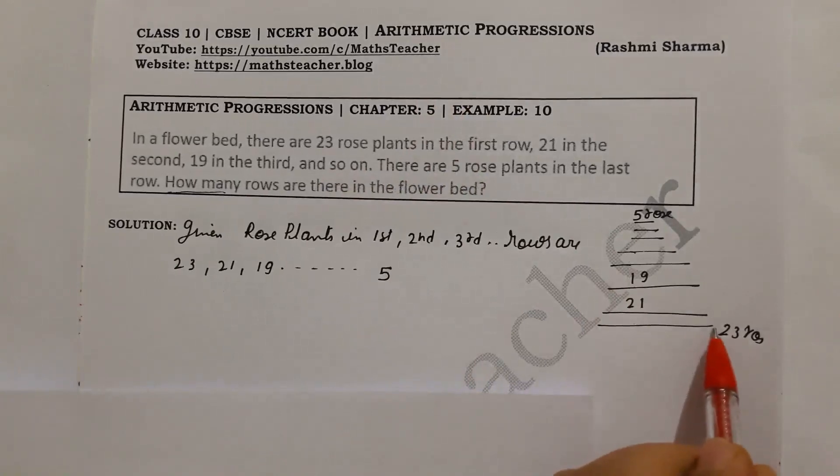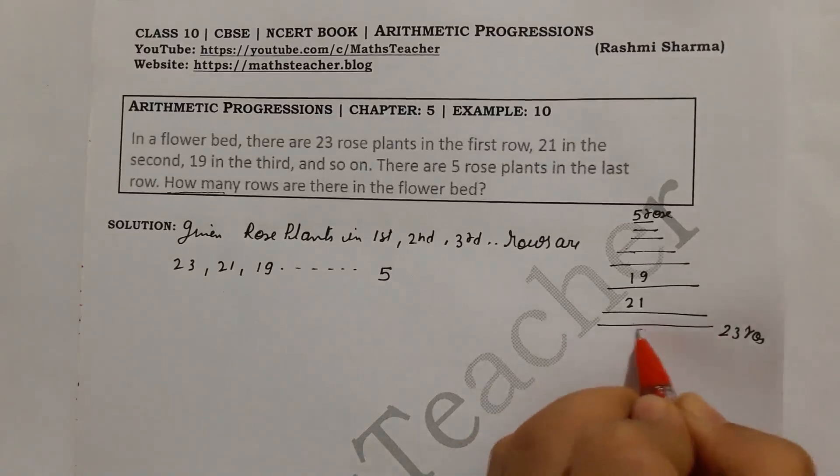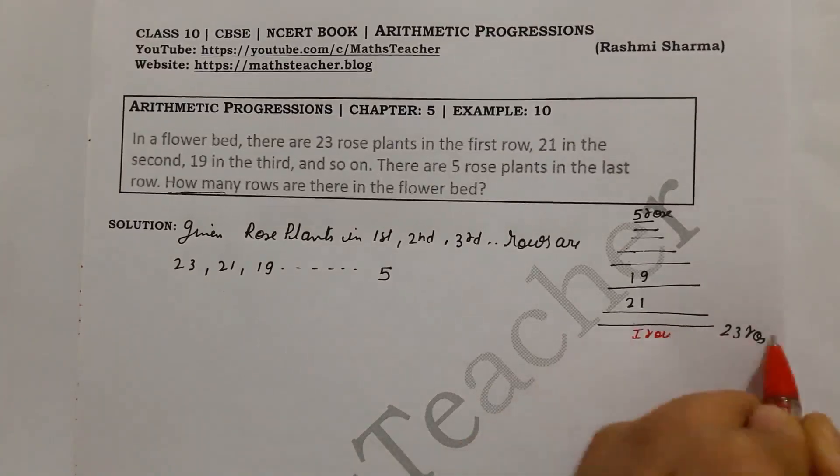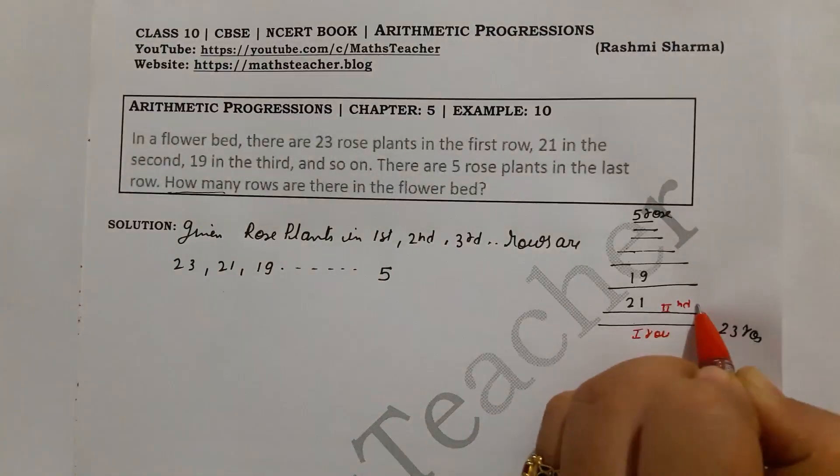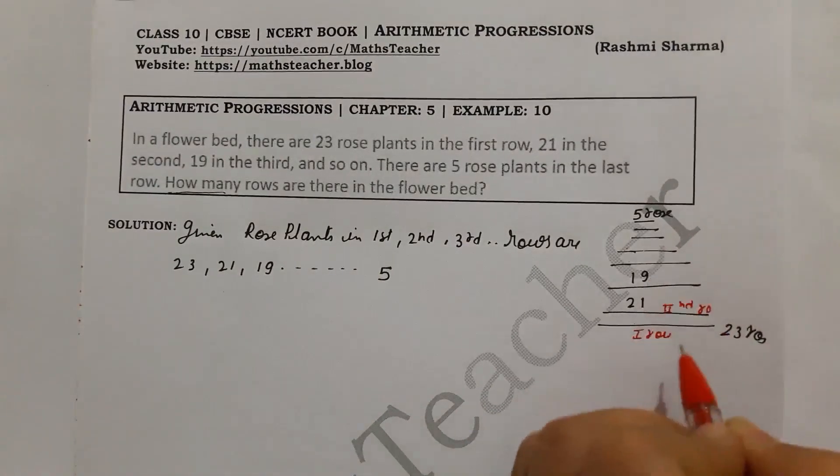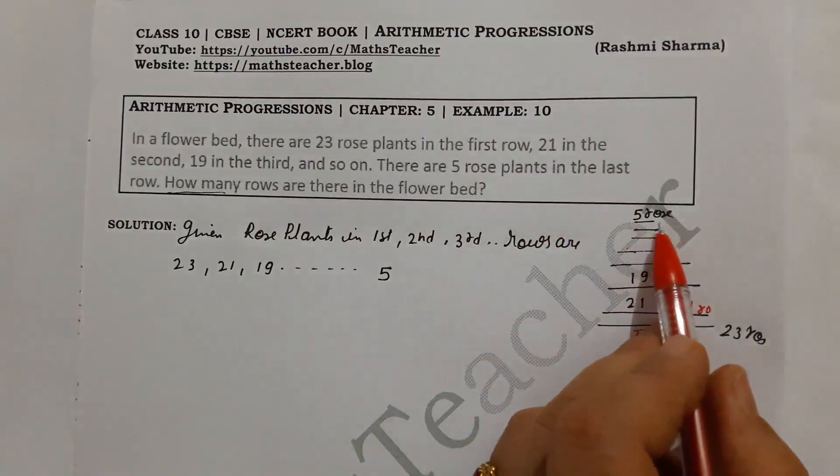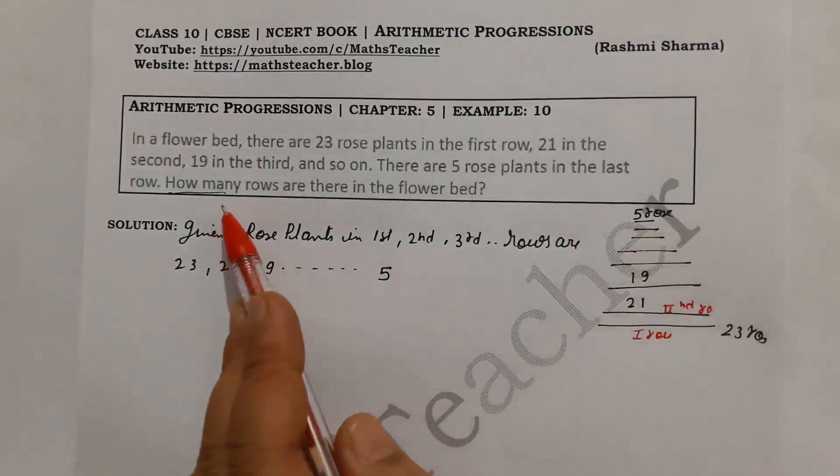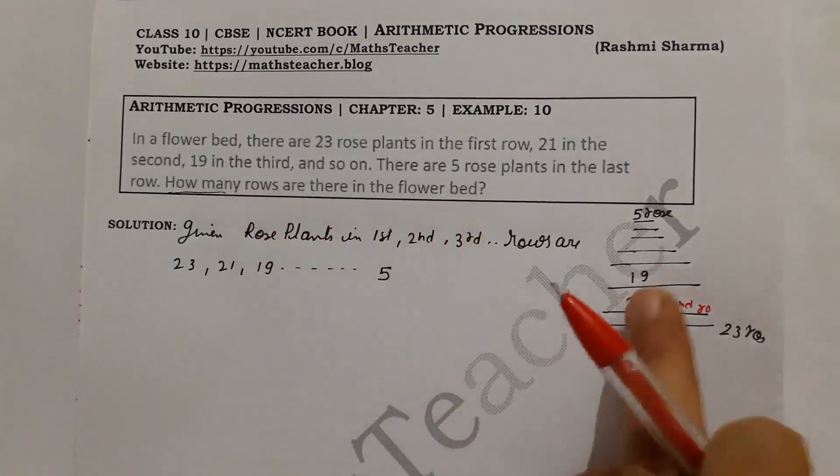As you can see here, the first row has 23 roses, the second row has 21 roses, the third row has 19, and the last row has 5 roses. Now, how many rows are there in total in the flower bed?